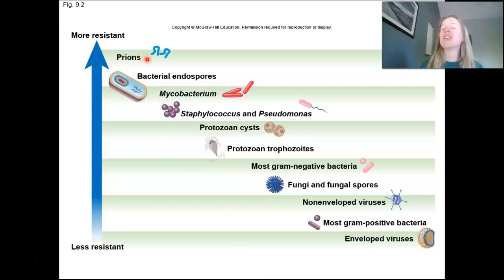I thought this was a really nice image. The most resistant to destruction are going to be the prions. And if you remember prions, those are the infectious proteins. They're already denatured. They're already misshapen. And so there's like nothing you can do for prions. What are you going to do? Heat them up, cook them, try to denature them. They're already denatured.